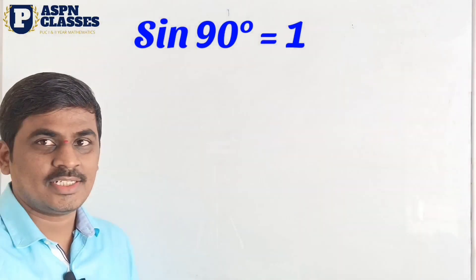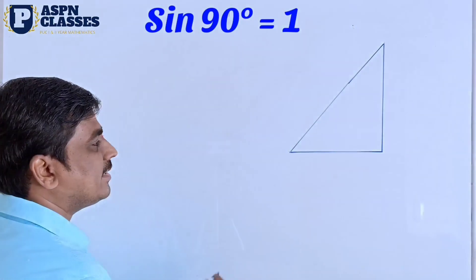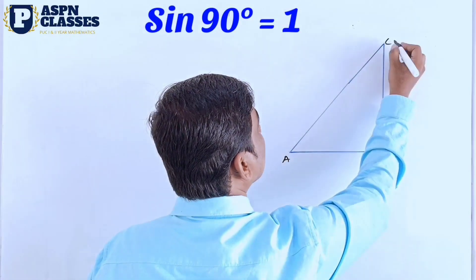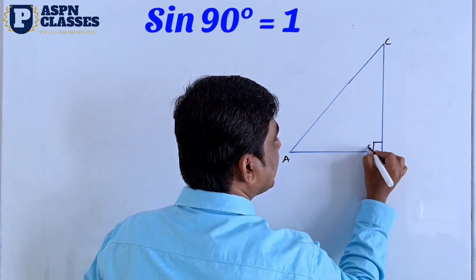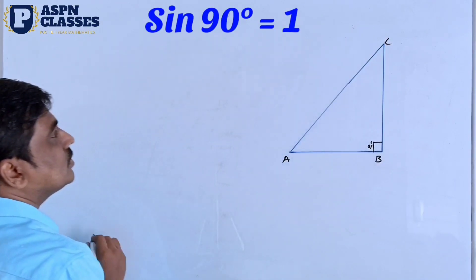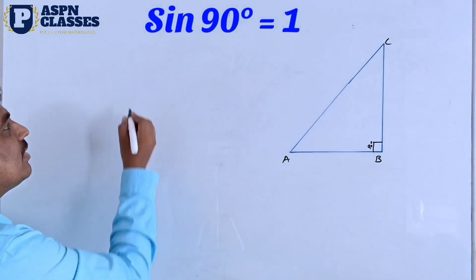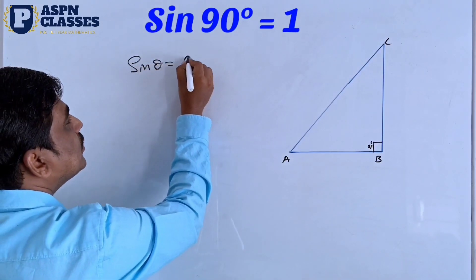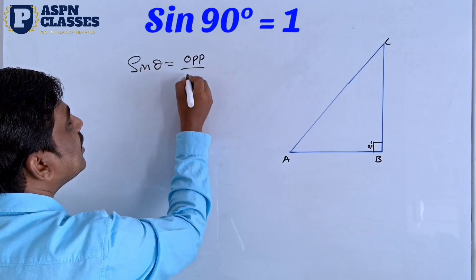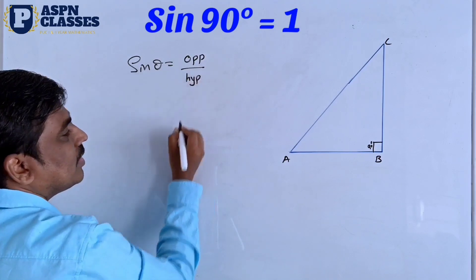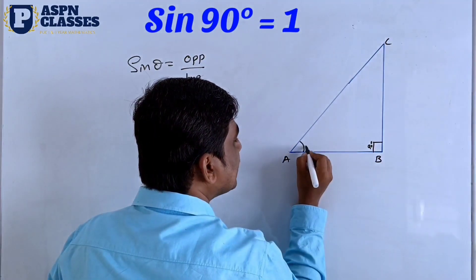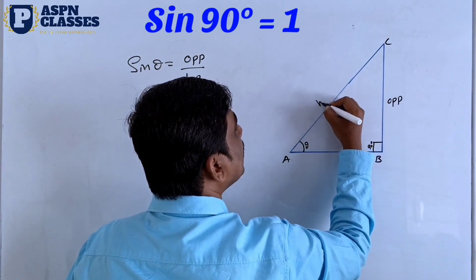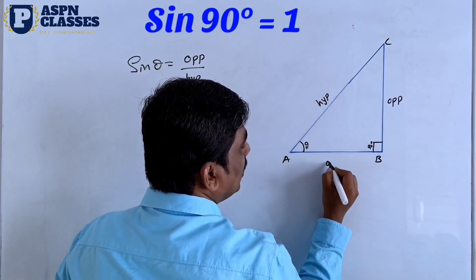First, we will consider a right-angle triangle A, B, C, where this angle is 90 degrees. We already know the formula: sin(θ) is the opposite side divided by hypotenuse. I will consider theta here. This is the opposite side, this is the hypotenuse side, and this is the adjacent side.